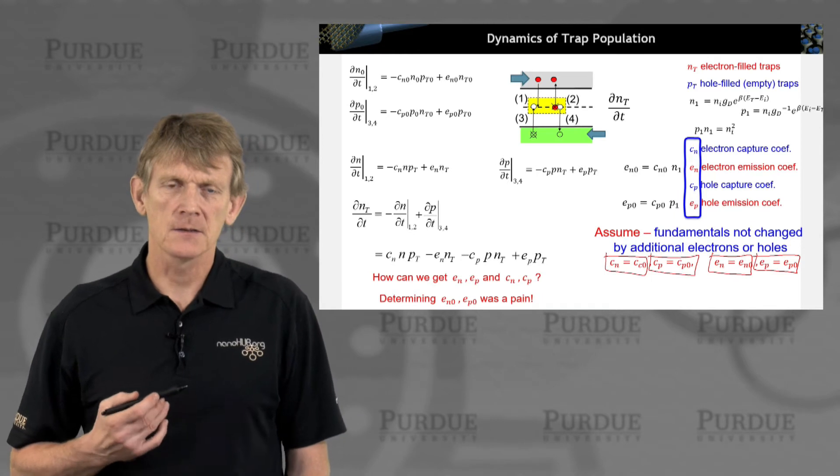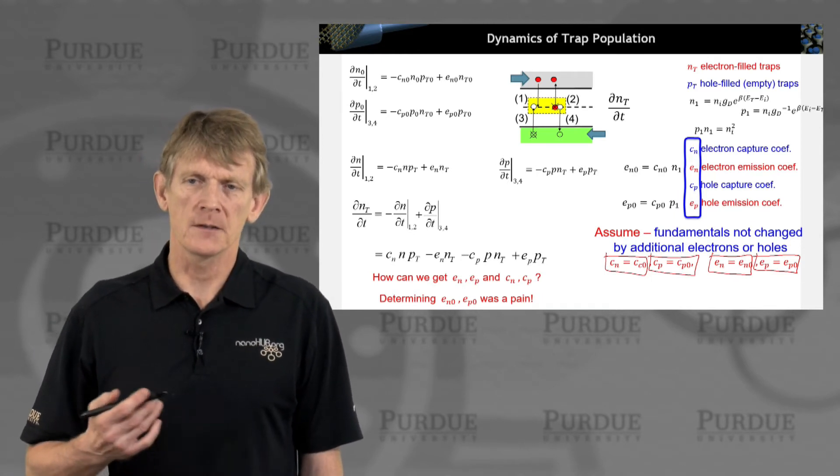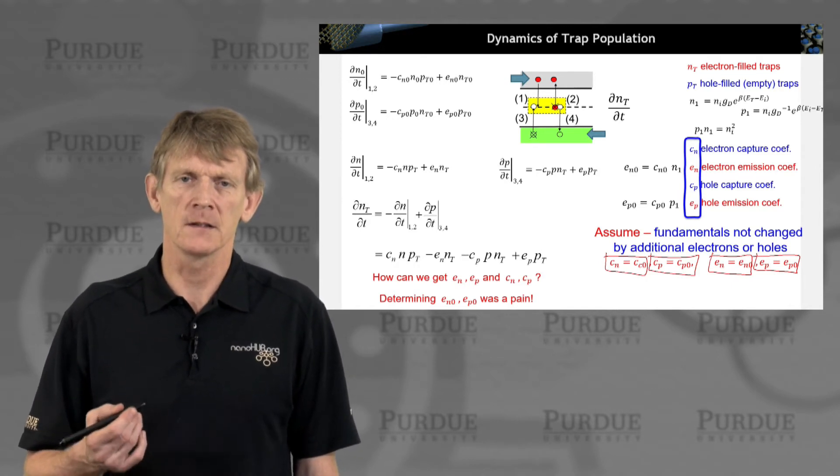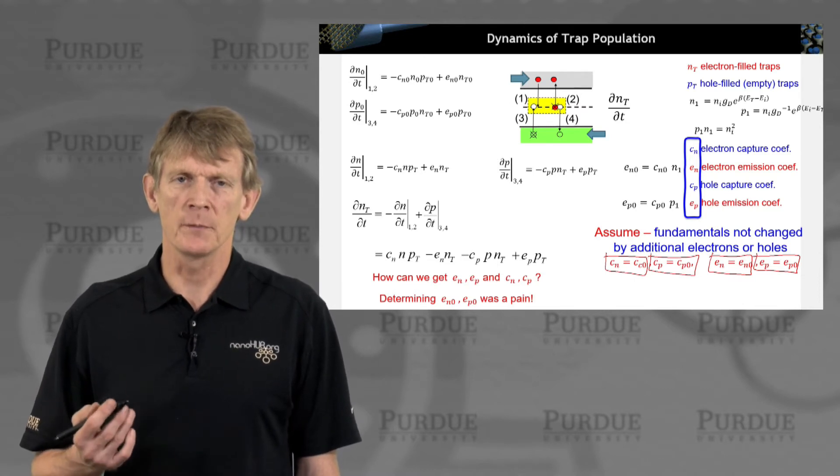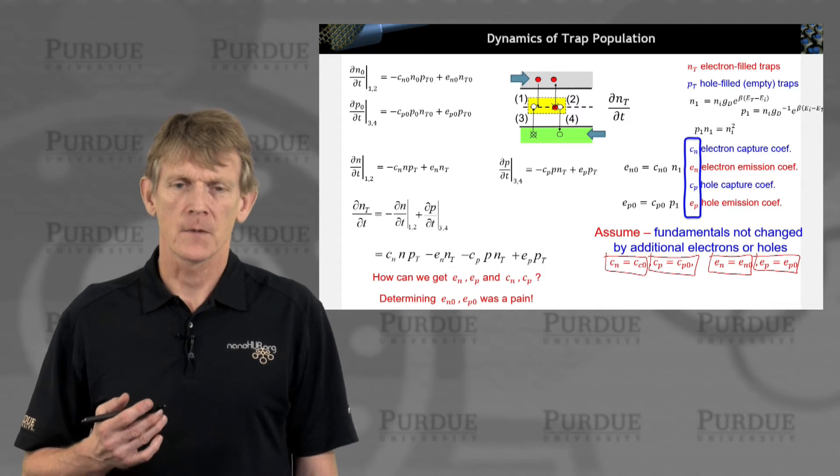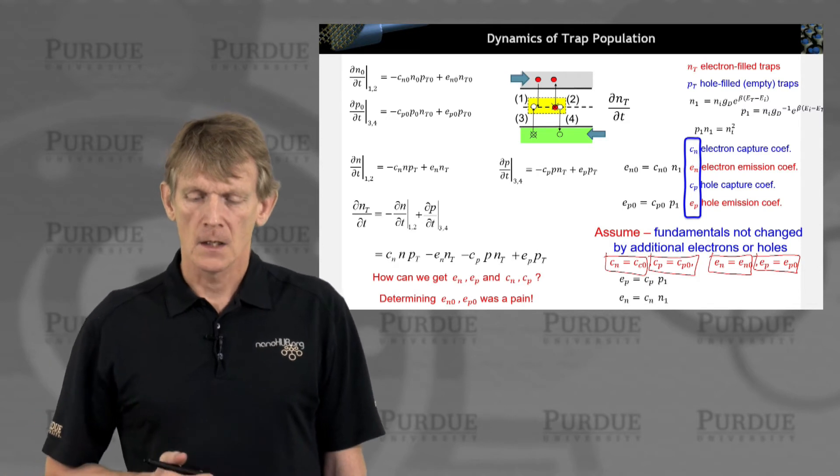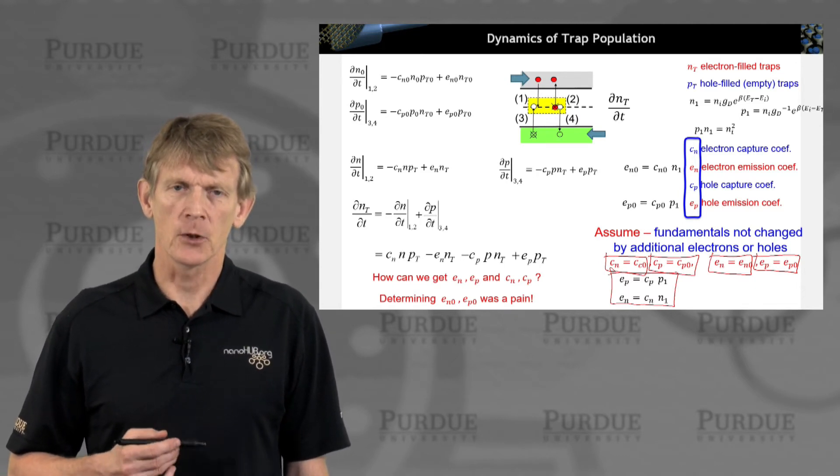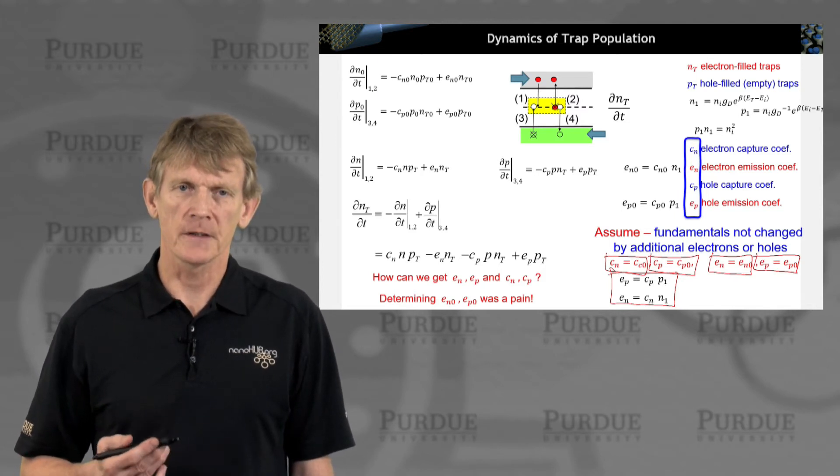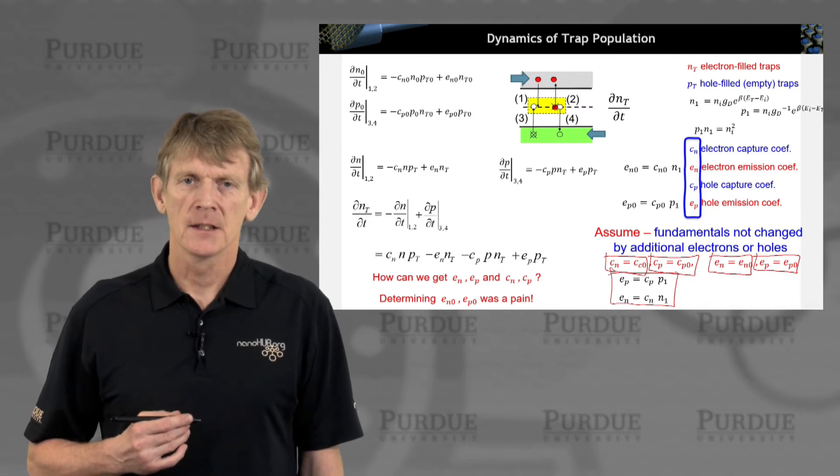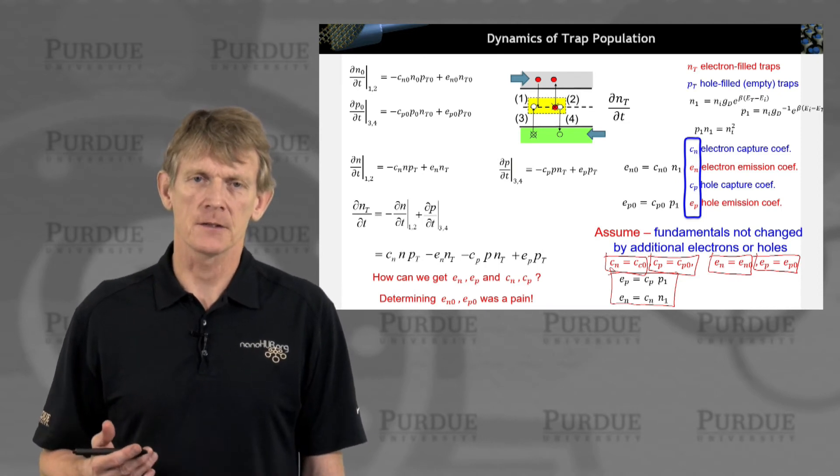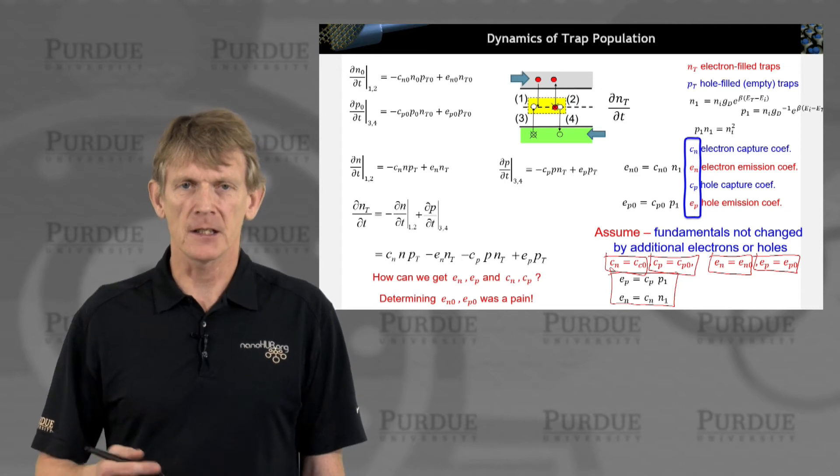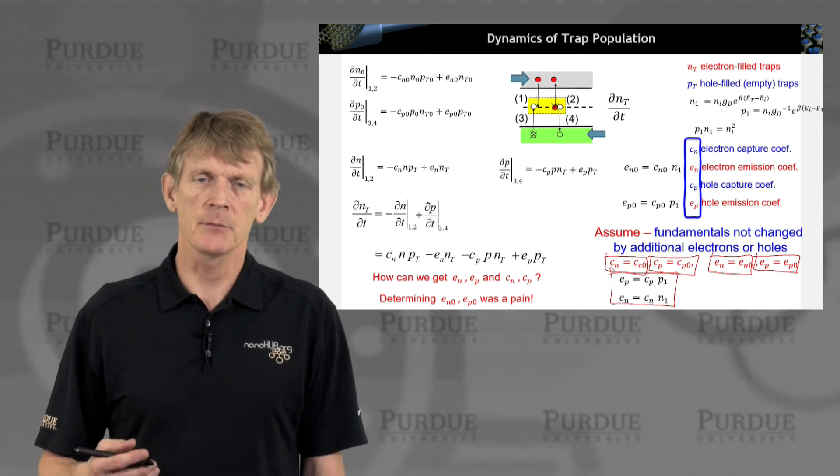If that's true, then we can say that the capture rates are the equilibrium capture rates and the emissions coefficients are the equilibrium emission coefficients. What that means is a trap will continue to emit or capture electrons regardless of how heavily other electrons are floating around, because we're looking at one individual process for one individual trap. That overall trap is not being moved by the electrons physically or it doesn't change its chemistry. But the occupation of electrons, the occupation of holes, the occupation of the traps, that can be all driven out of equilibrium.